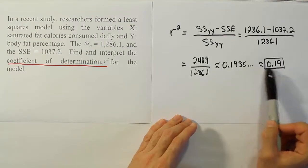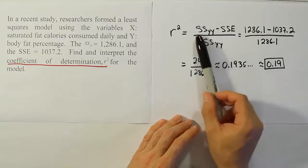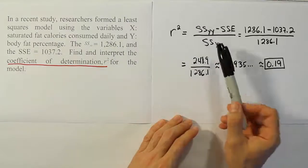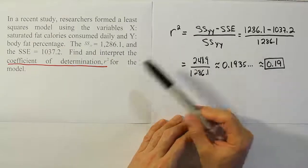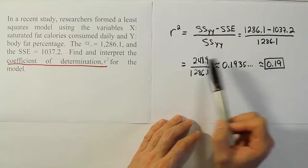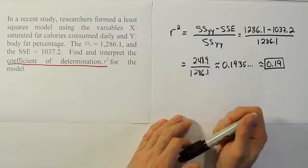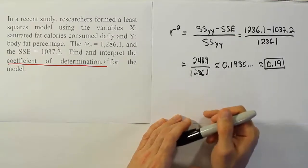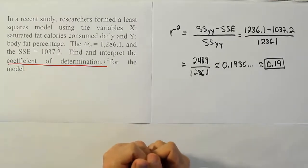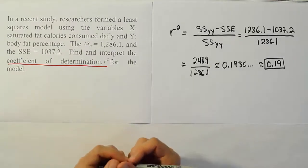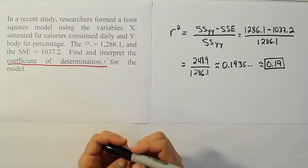So, we're saying about 19% of the differences you see in two people's body fat percentages, or the differences you see in body fat percentages among people, about 19% of those differences can be explained by the inclusion of X in our model.